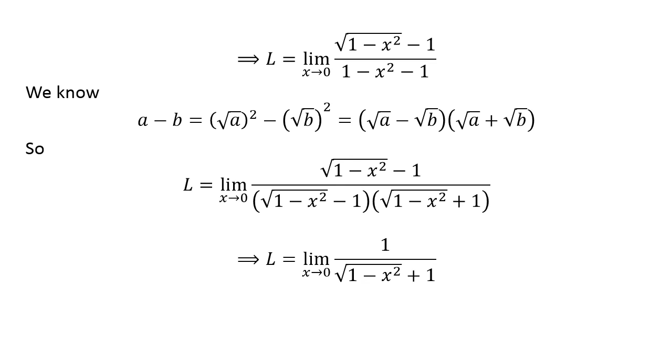Cancelling out the common factor we get L equals limit of 1 upon square root of 1 minus x squared plus 1 as x approaches 0.